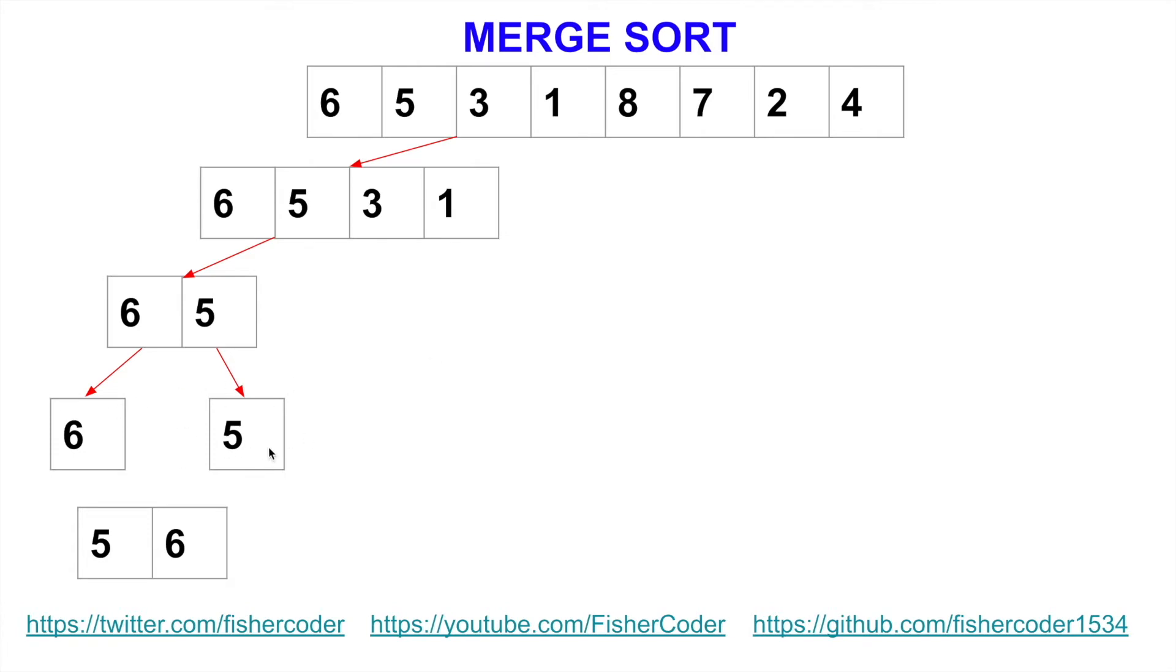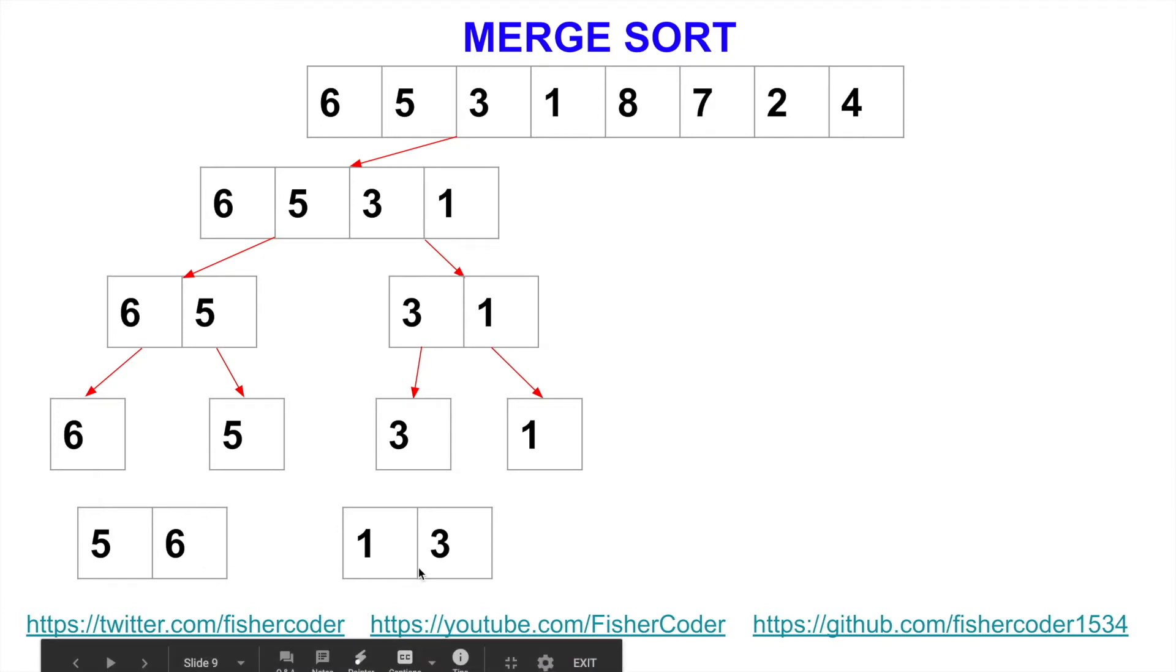So after we have finished this level, we can go back to this level. This level we have sorted and then we go back to here. 3 and 1. So we divide this. 3 and 1. So 3 and 1 could be divided into 3 and 1. There's two individualized items. What's the correct order of 3 and 1? It should be 1 and 3. So now you see we have these two subarrays that are sorted by themselves. But these two, if they are combined, they are not sorted yet.